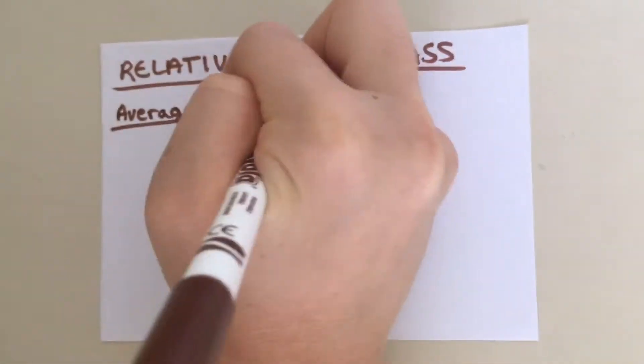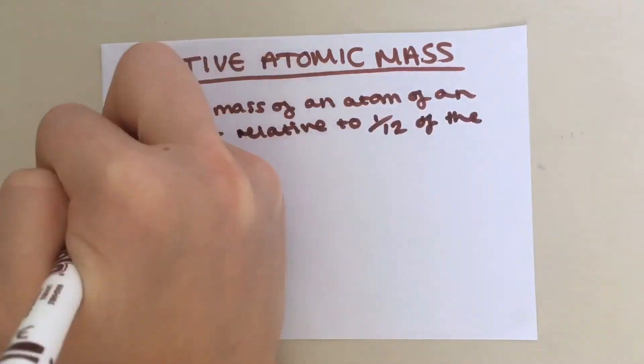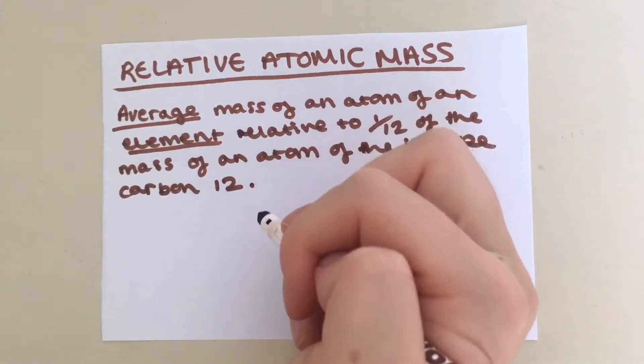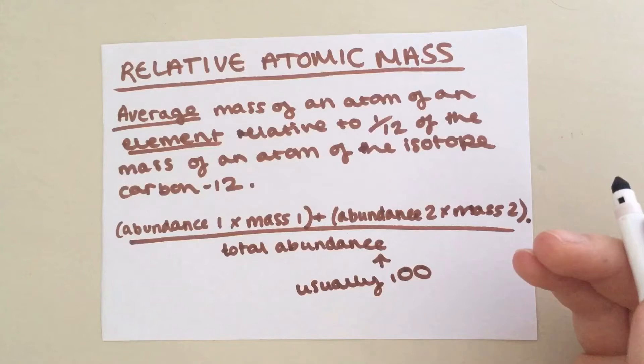Relative atomic mass is the average mass of an atom of an element relative to one twelfth of the mass of an atom of the isotope carbon-12. It's important that you don't get this mixed up with relative isotopic mass. To calculate relative atomic mass, you multiply the abundance of your first isotope by the mass of your first isotope and then add the abundance of your second isotope times the mass of your second isotope and so on, depending on how many isotopes you have, and then you divide this by the total abundance which is usually 100.